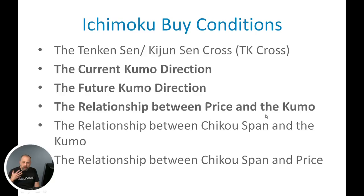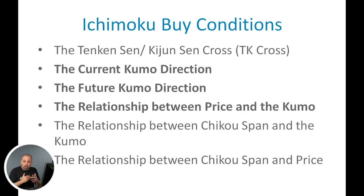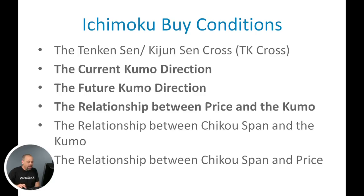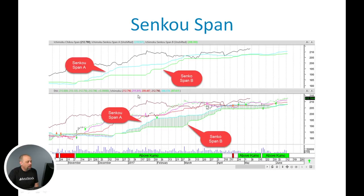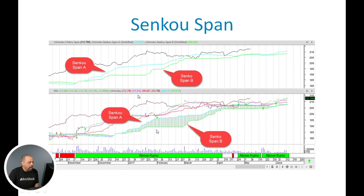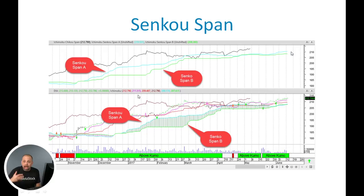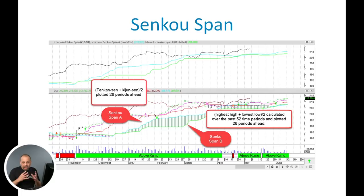The next section we're going to talk about is the Kumo. The Kumo means 'cloud' in Japanese. Right here we're focusing on the blue line and the green line, which appear in both the bottom pane and the upper pane of the chart — they are exactly the same. This representation of the Senkospan A and the Senkospan B plotted back in the past shows future Kumo values on the chart. The Senkospan A takes the Tenkan-Sen and the Kijun-Sen, adds those values together, divides them by two, and plots that 26 periods into the future.